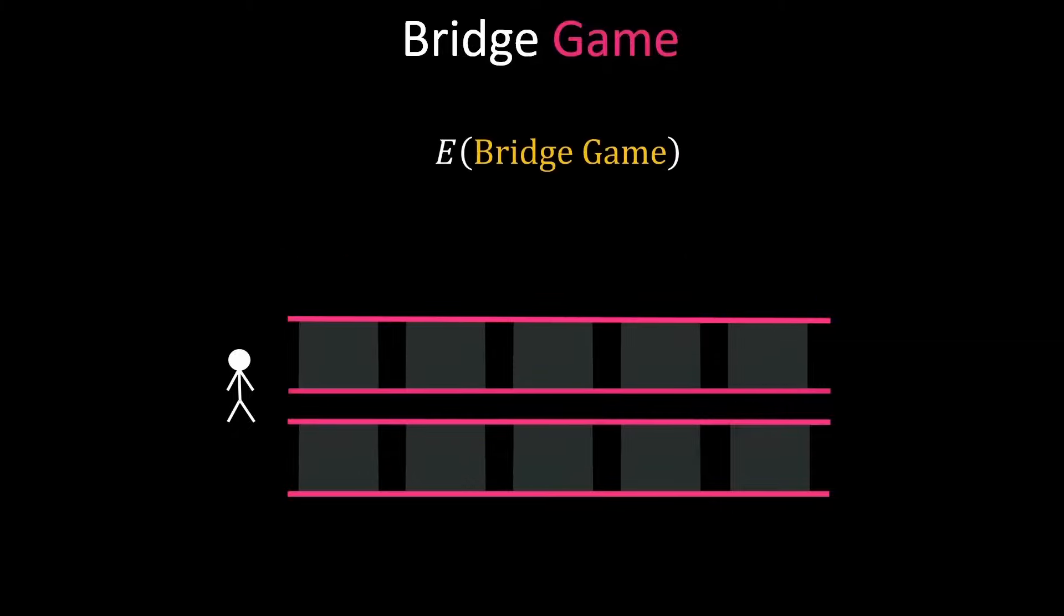If we use numbers from the show we get a bridge with a length of 18 jumps. We can then define the expected survivors after the 18th jump as one half times the expected survivors of the 17th jump minus one plus one half times just the expected survivors of the 17th jump.